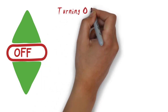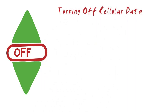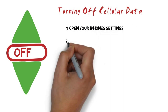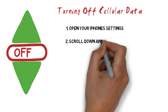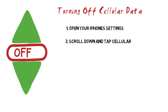Method 3: Turning off cellular data. Open your iPhone's Settings — the icon appears as a set of gray gears on the home screen. Scroll down and tap Cellular. It is located in the first set of menu options. The button will be labeled Mobile Data for British users.